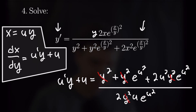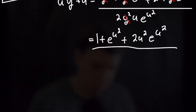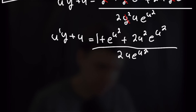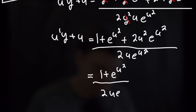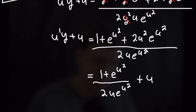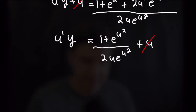Rewriting that gives us 1 plus e to the u squared plus 2u squared e to the u squared, all over 2u e to the u squared, equal to u prime y plus u. Splitting up this fraction, the right-hand portion cancels to just u, which cancels with the u on the left side. That gives us the whole thing equal to u prime y. Now we have a separable differential equation.